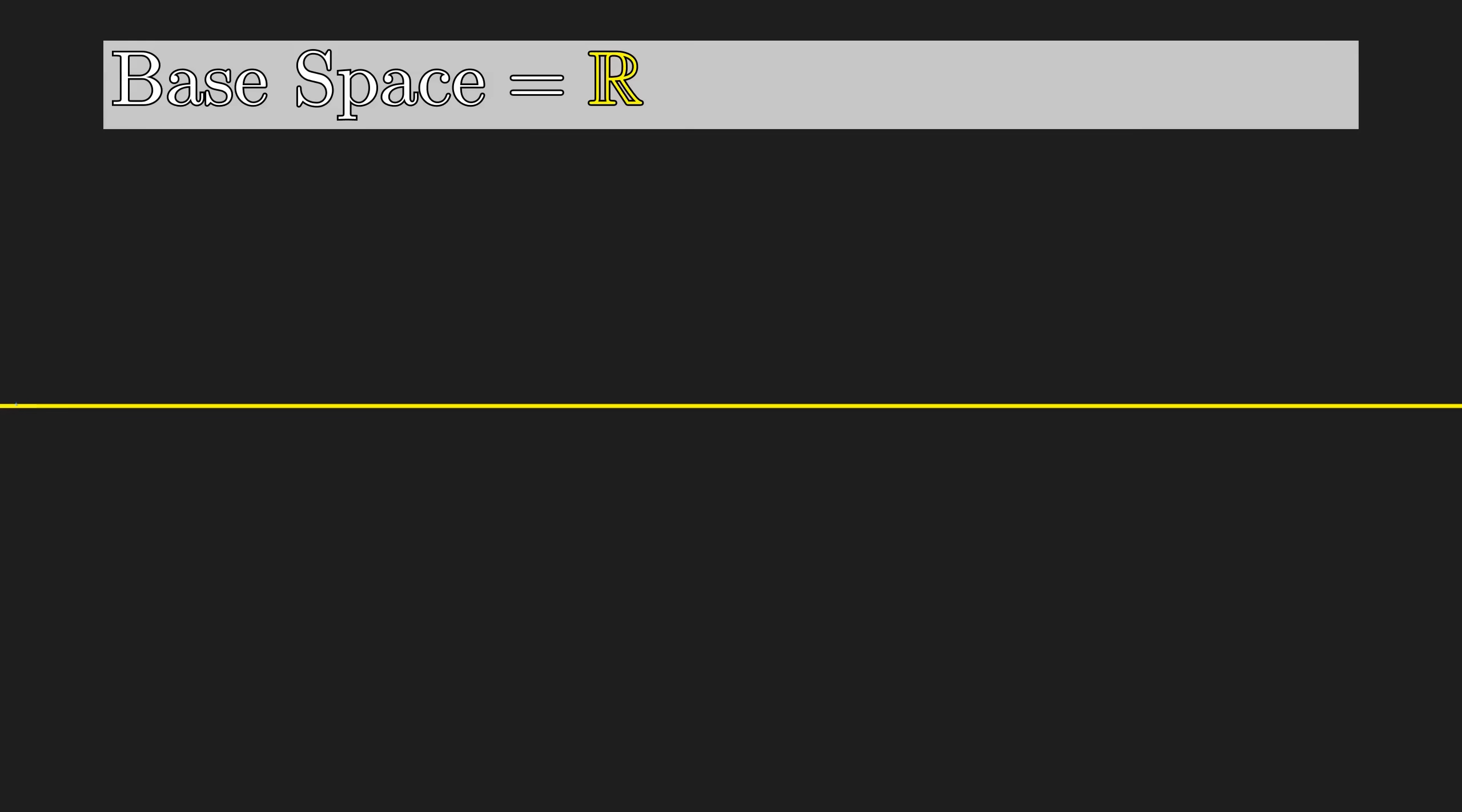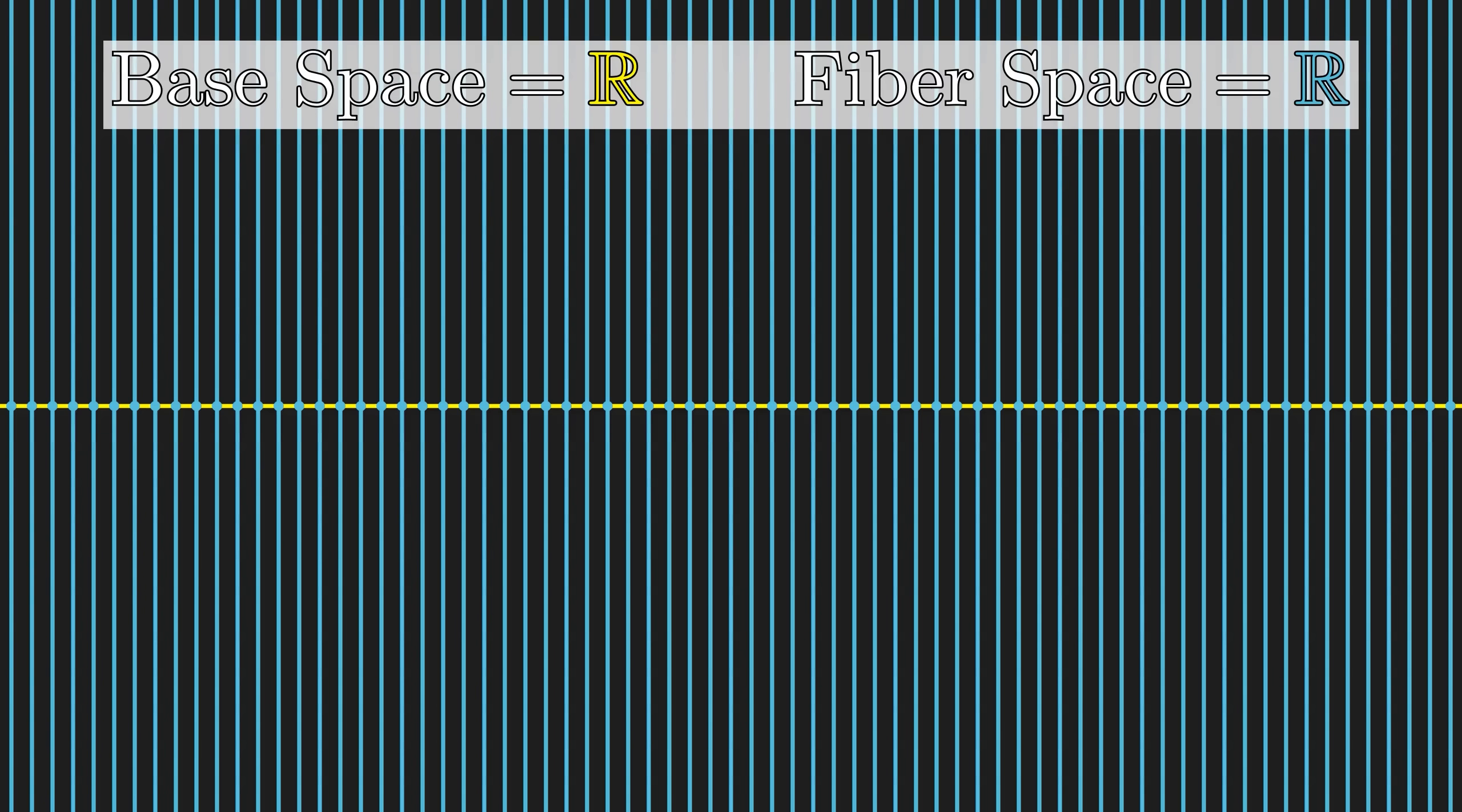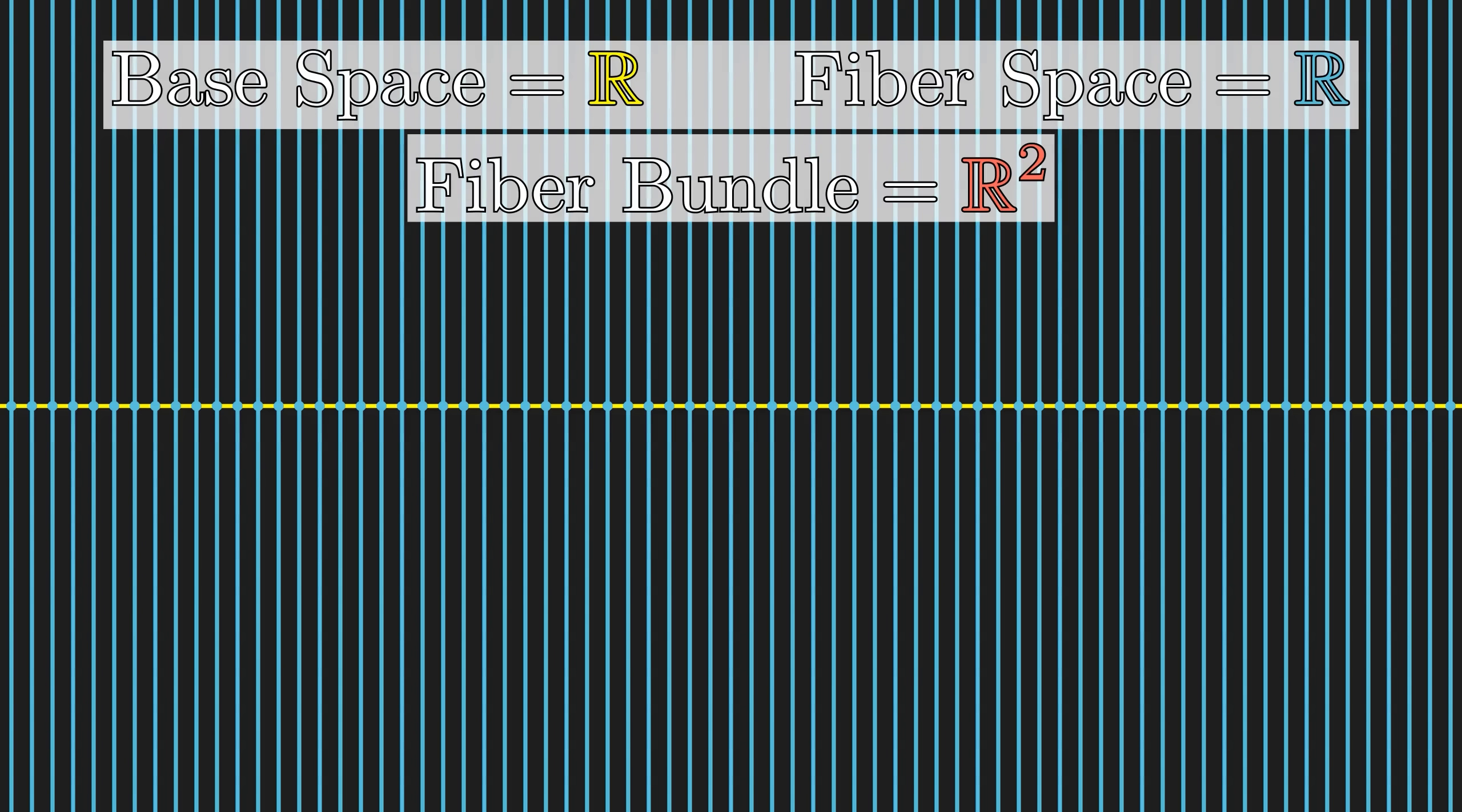Now, let's take a look at that from a bundle theoretic point of view. Let's place down a line, which we can call the base space. And for each point on the line, we can grow a fiber that's also a line, which we call the fiber space. And the resulting space is called the fiber bundle, which in this case is just a plane.